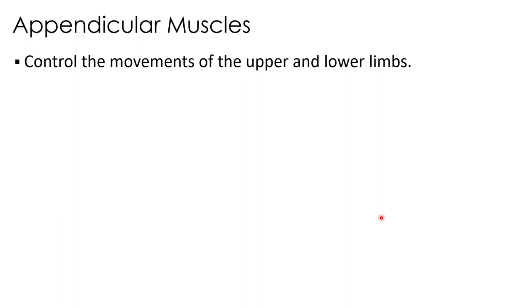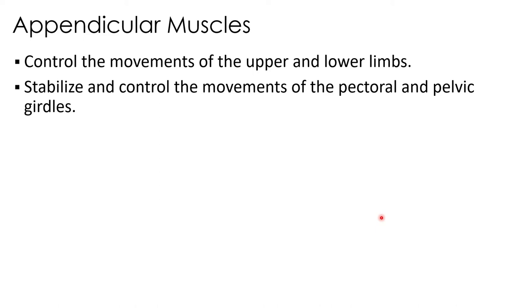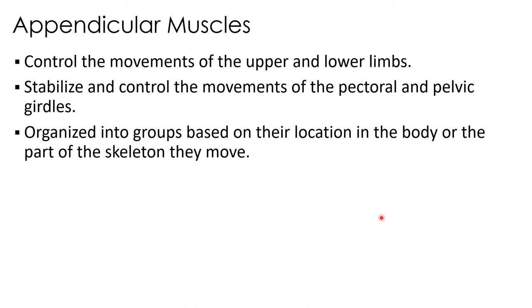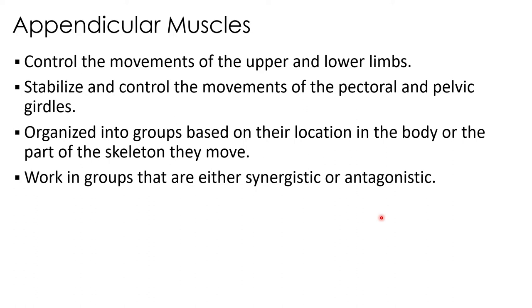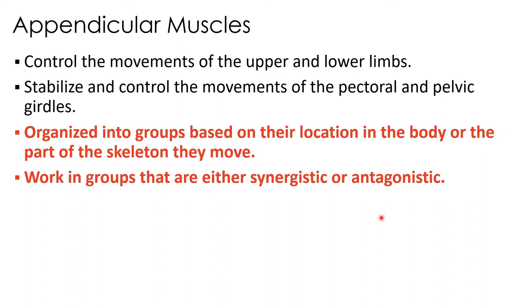In contrast to the axial muscles, the appendicular muscles as a whole control the movement of the upper and lower limbs. They stabilize and control the movements of the pectoral and pelvic girdles, and are organized into groups based on their location in the body or the part of the skeleton they move. They work in groups that are either synergistic or antagonistic — and understanding why a muscle does what it does based on where it's located will help far more than just memorizing charts of origins, insertions, and actions.